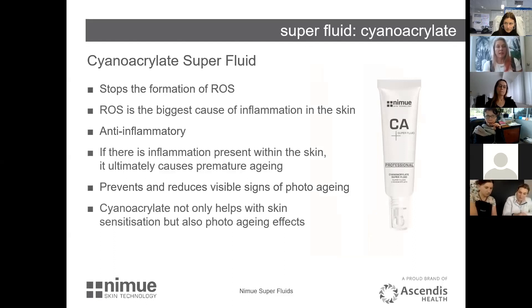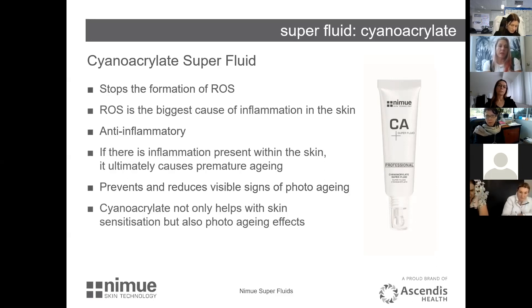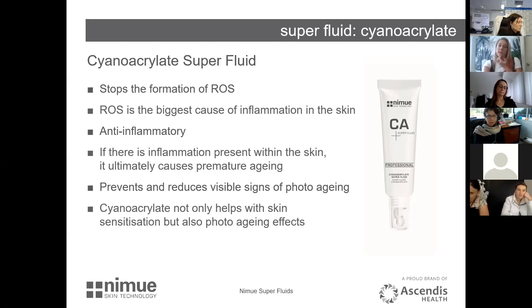CA helps quench and stop the formation of reactive oxygen species. ROS — reactive oxygen species — that O2 double free radical from light and free radicals causes massive damage: it destroys DNA, the cell membrane, collagen, and elastin. CA acts as an anti-inflammatory. Inflammation in the skin causes premature aging. When people use this at home, that redness and unevenness visibly reduces within a couple of days.